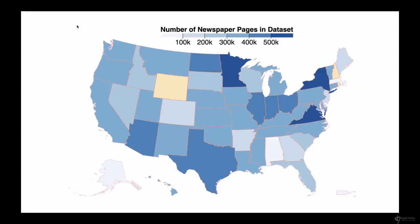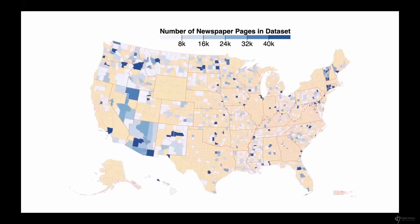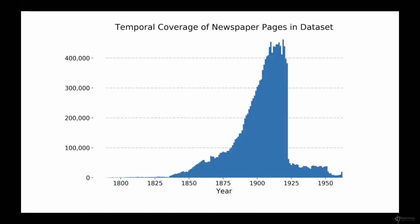Here is a map showing the number of newspaper pages digitized by state. This visualization is from about 2020 when I started the project — at the time it contained about 47 states plus additional territories and Washington D.C. Here's a more granular view looking at various counties. I like this because it gives a sense of how local so many of these newspaper pages are, and how many counties are covered by Chronicling America.